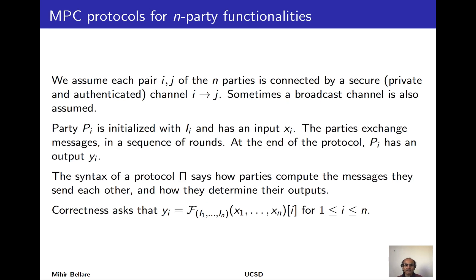Once we have a target functionality, we're interested in designing a secure computation protocol for it. We imagine that each of the n parties is communicating through pairwise secure channels with the others — each pair i and j is connected by a channel that's both private and authentic, written as i arrow j. In some cases there's also a broadcast channel assumed. How these channels are created is not part of the MPC protocol context — you might create them using the cryptography we've studied or by other out-of-band means.